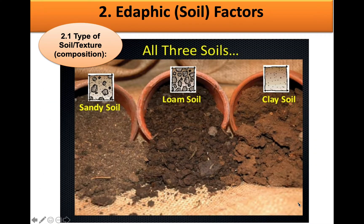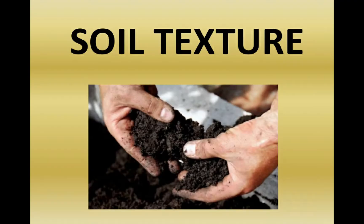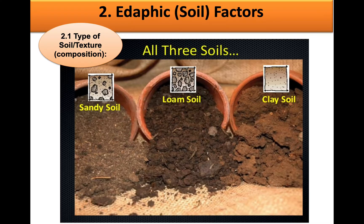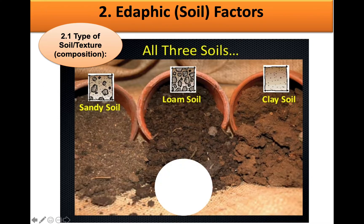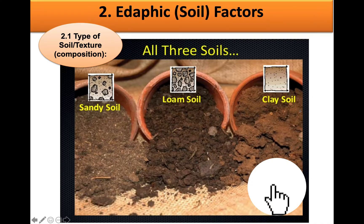Let's begin with the type of soil or texture. Soil texture refers to how fine the soil is or how coarse or rough the soil is. There are three types of soil: we get sandy soil, loam soil, and clay soil.